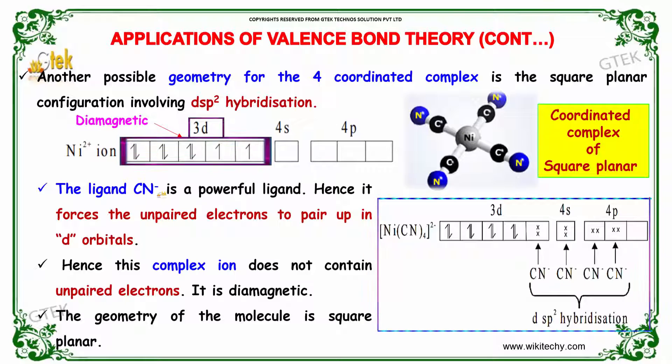The ligand CN- is a powerful ligand. Hence, it forces the unpaired electrons to pair up in the d-orbital. This complex ion does not contain unpaired electrons, so it is diamagnetic. The geometry of the molecule is square planar.